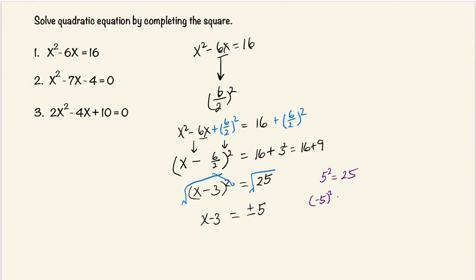Negative 5 squared is also equal to 25, so we need to make sure we have positive and negative here. Now we're going to add 3 to both sides. This will cancel. This becomes x is equal to plus or minus 5 plus 3. And this is basically two equations.